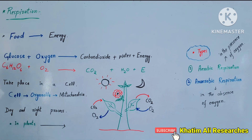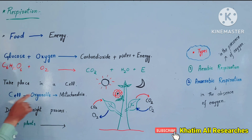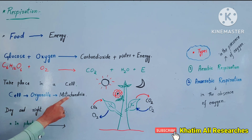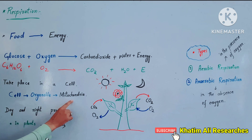Respiration takes place in a cell — whether it's a plant or animal cell. Inside the cell, there are organelles like ribosome, mitochondria, and chloroplast. Respiration is done in the mitochondria.